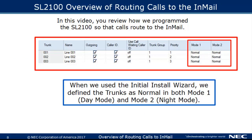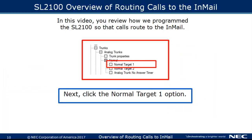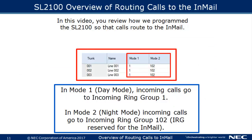When we used the initial install wizard, we defined the trunks as normal in both Mode 1, which is Day Mode, and Mode 2, which is Night Mode. To see how the trunks are programmed when they are defined as normal, click to expand the highlighted option. Next, click the Normal Target 1 option. In Mode 1, which is Day Mode, incoming calls go to Incoming Ring Group 1.